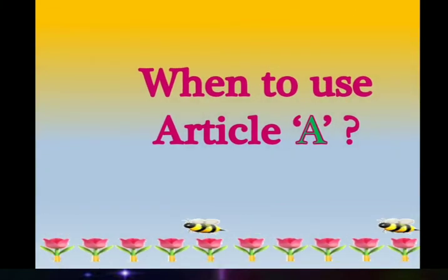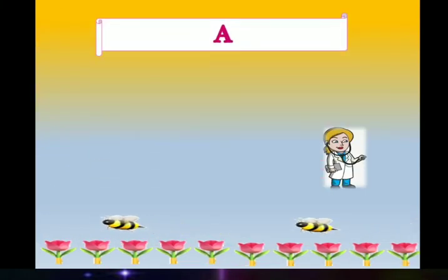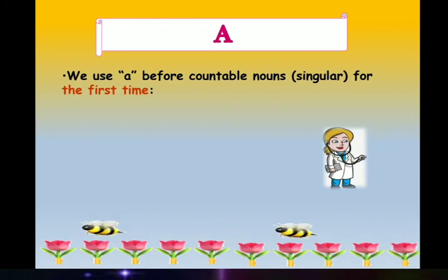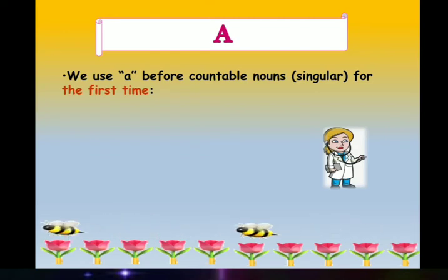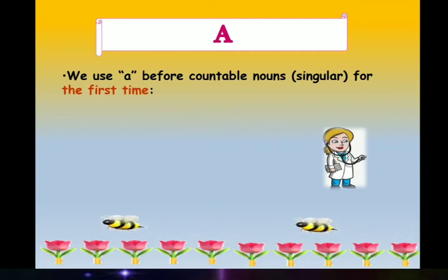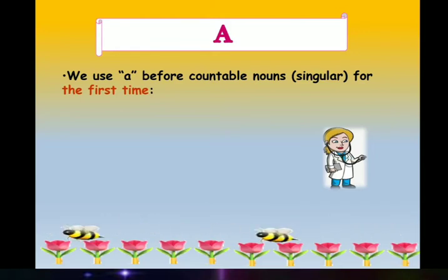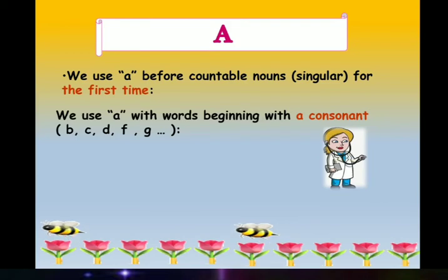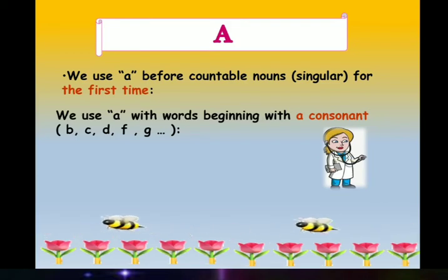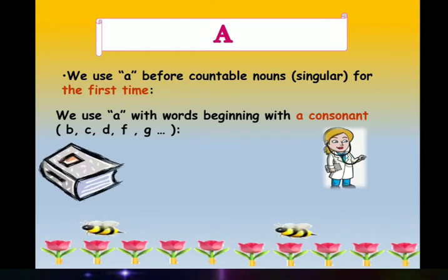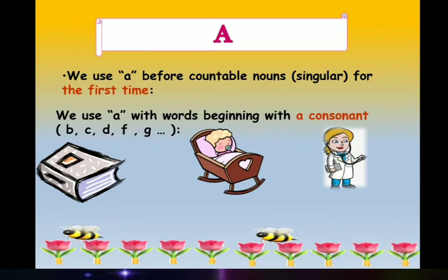Let's understand when to use article A. We use A before countable nouns. Countable nouns means the nouns which we can count. For example, girl, girls. We have to take a countable noun but it should be singular. We use A with words beginning with a consonant letter or consonant sounds. For example, book, baby.